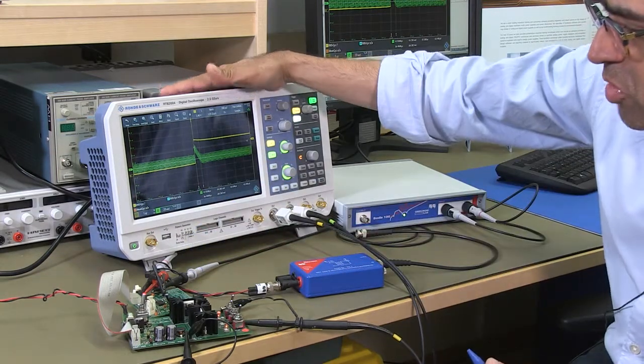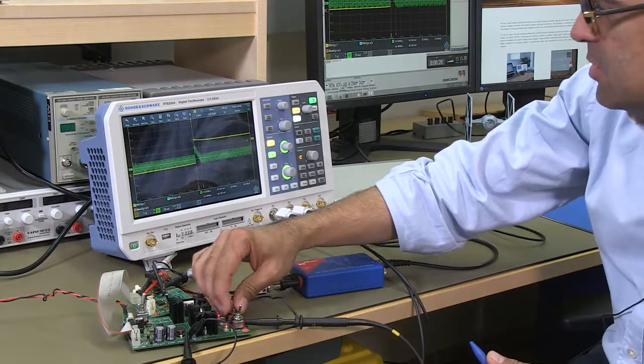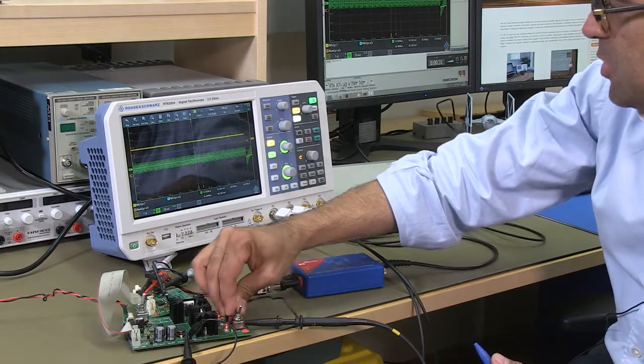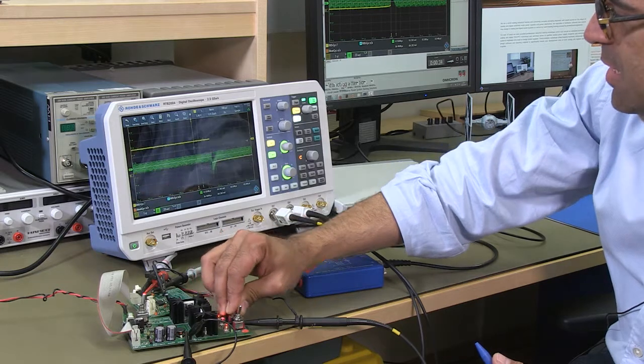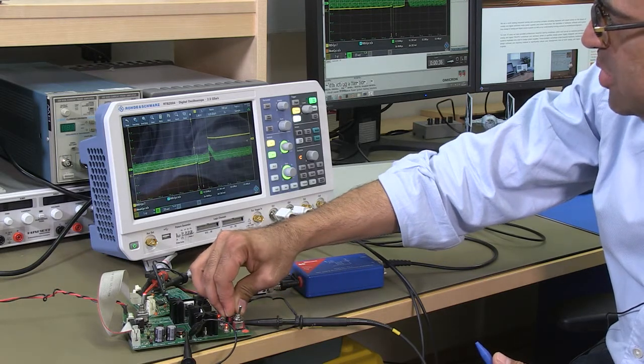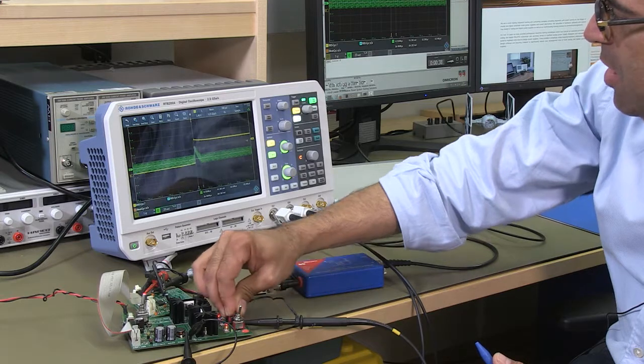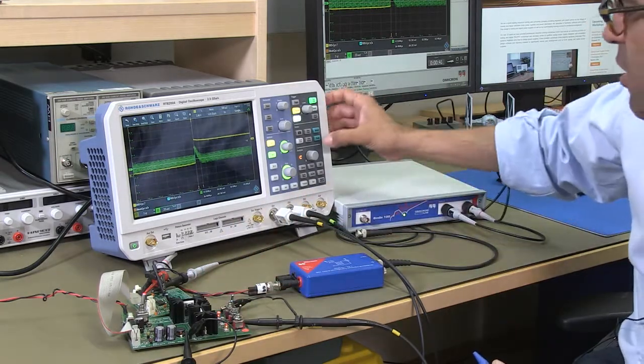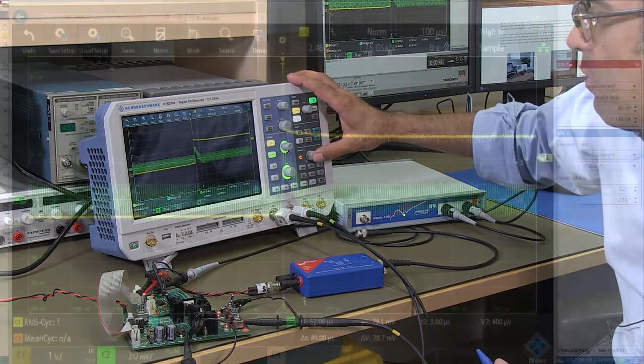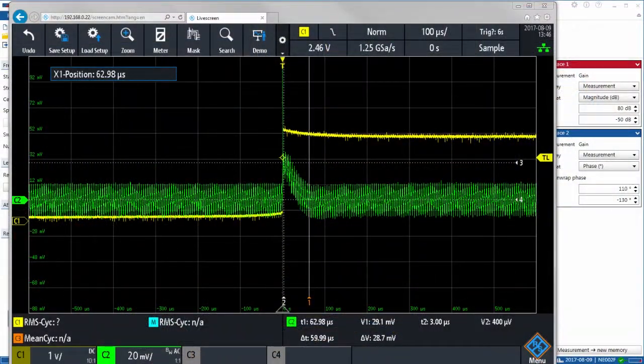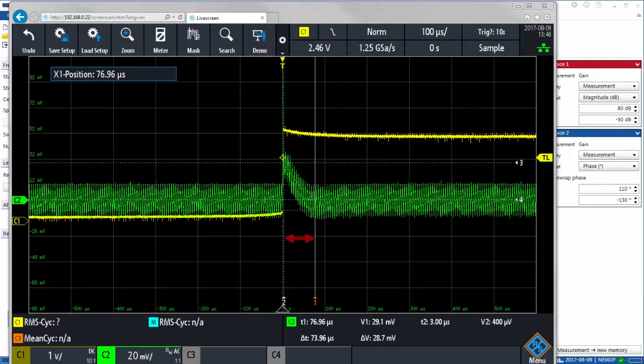Here I've got my oscilloscope and I'm going to give it a transient step from 50% to 100% and you can see that I have got actually a beautiful transient response here whereby I am recovering in about 70 microseconds and I have got an overshoot undershoot of about 30 millivolts.